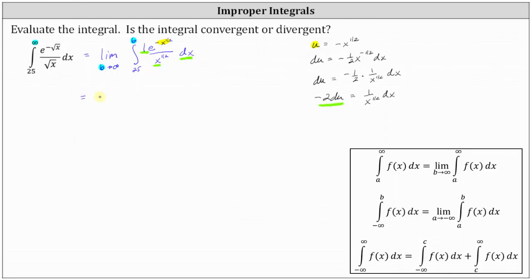This gives us the limit as b approaches infinity of the integral. We need to be careful here: the limits of integration from 25 to b are x values, not u values. So I will write the lower limit as x equals 25 and the upper limit as x equals b to emphasize that. Since one divided by x to the power of one half dx equals negative two du, I factor out the negative two, leaving du, and the integrand with respect to u is just e to the u.